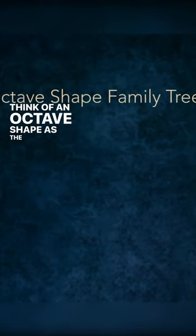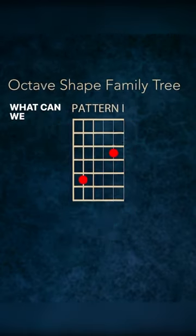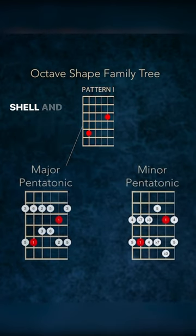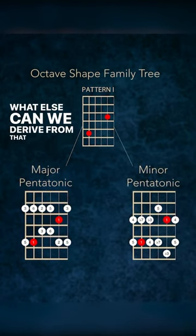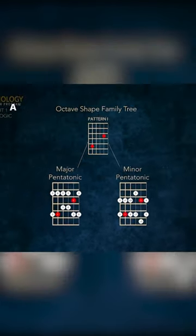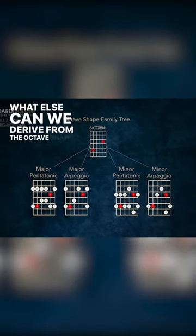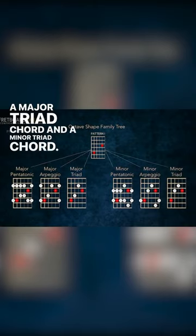Think of an octave shape as the great-grandparents. We'll start by looking at octave shape one, or what we can call pattern one. What can we derive from that octave shape? A major pentatonic shell and a minor pentatonic shell. What else can we derive from that octave shape? A major triad arpeggio and a minor triad arpeggio. What else can we derive from the octave shape? A major triad chord and a minor triad chord.